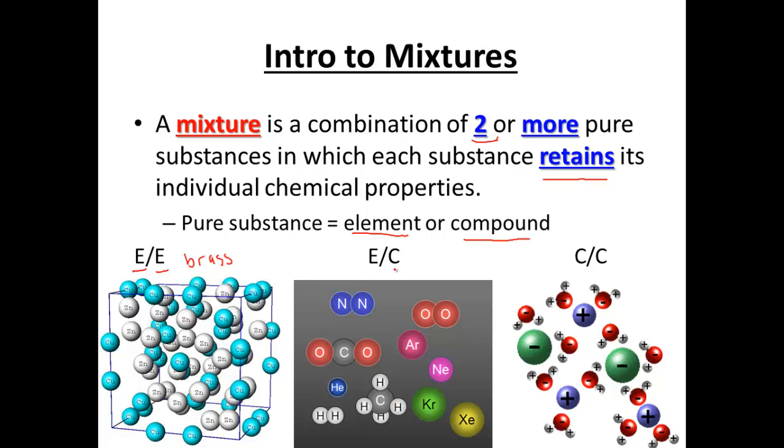We could have elements and compounds mixed together, nitrogen, oxygen, carbon dioxide, all of them equally mixed together. This would be an example of air, where each thing equally kind of mixed together. And then we could also have two compounds together, like water and salt. So we have salt water here. This are the chlorines and the sodiums intermixing with all of the H2O particles. So two or more substances mixed that retain their own individual properties.